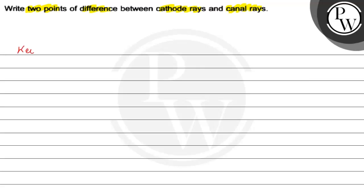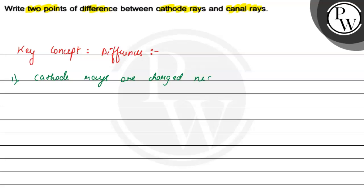What will happen in our key concept? The key concept is basically the differences only. Now, we have two differences. The first point of difference: cathode rays are negatively charged, whereas canal rays are charged positively. That is the first point of difference.